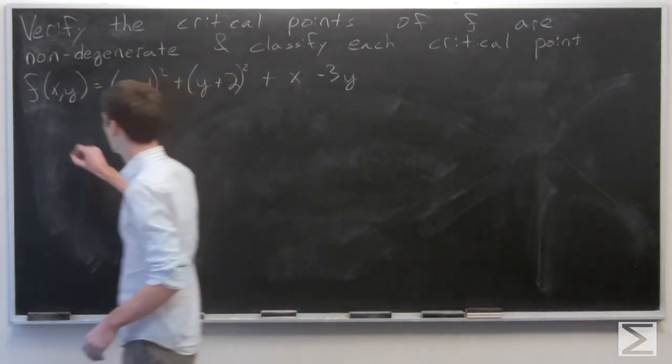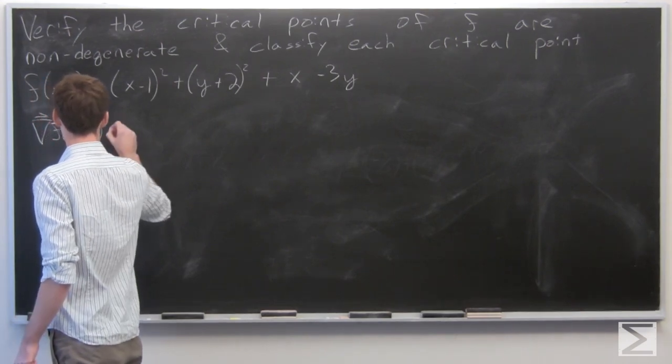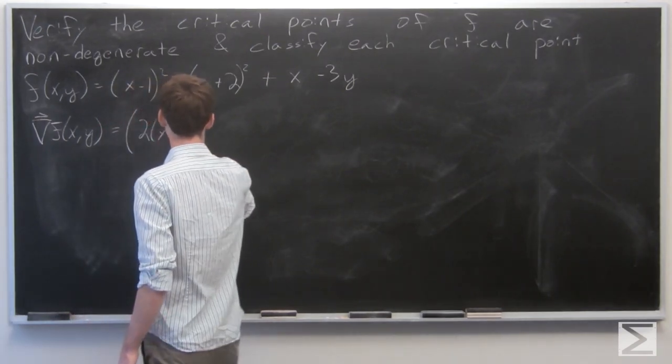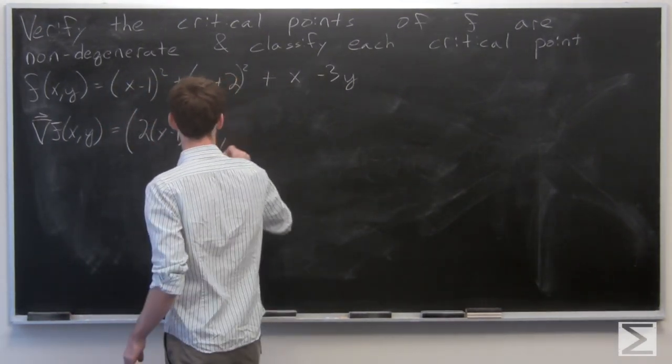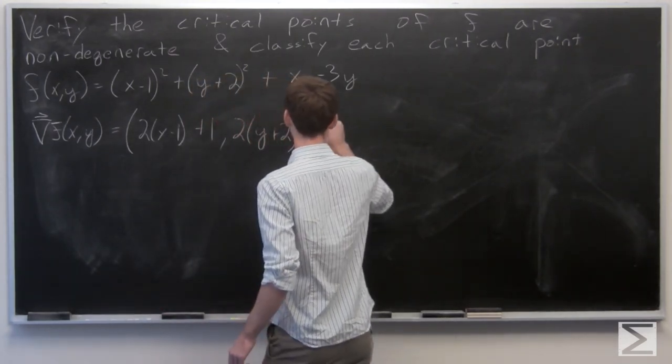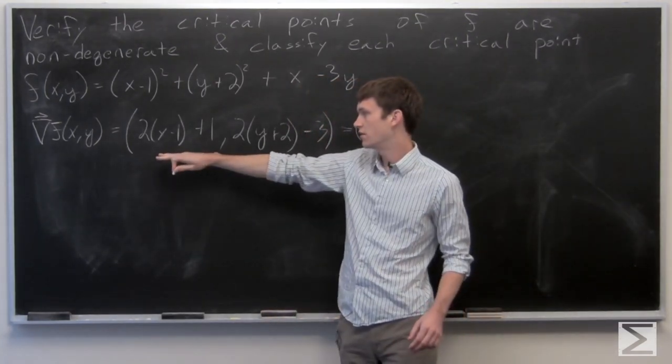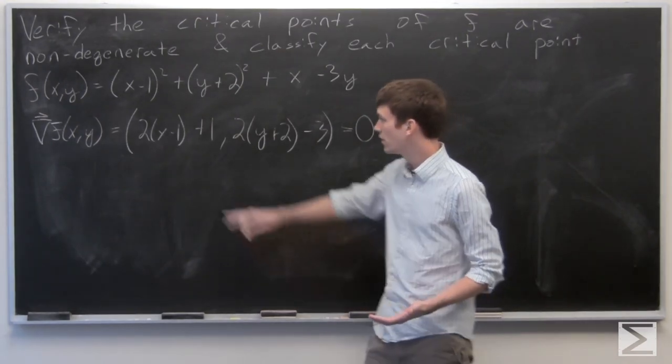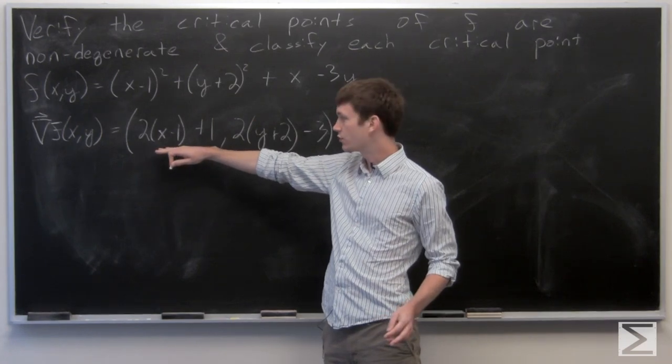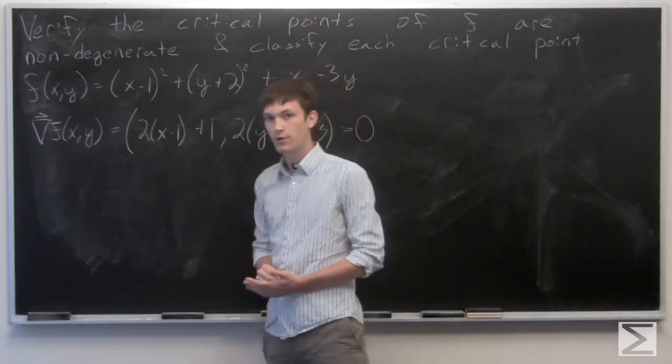So critical points occur when the gradient vector of f is equal to 0. So we have the partial derivative of f with respect to x and the partial derivative of f with respect to y. We'll set each of the components equal to 0.